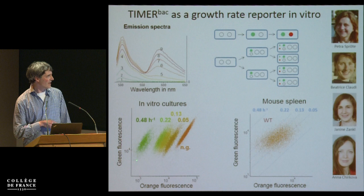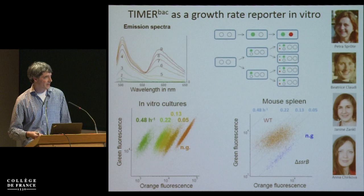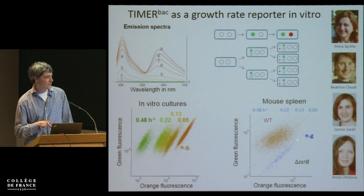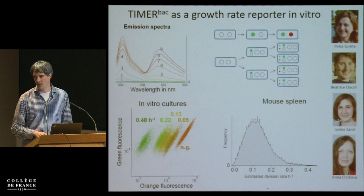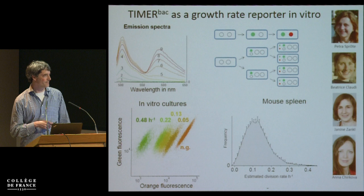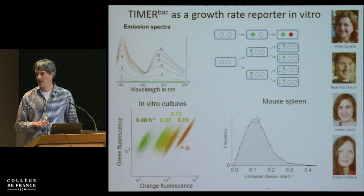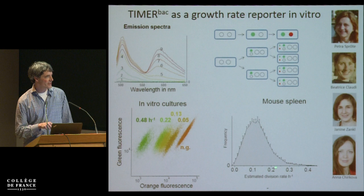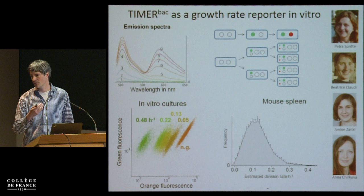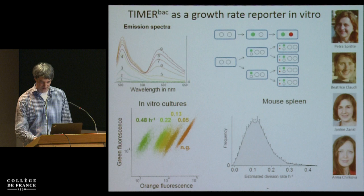In vivo, we don't have these nice sharp distributions but more like a diffuse cloud, which indicates diversity in growth rates. Comparing to a SPI-2 mutant that cannot divide, we get a distinct cloud. From these data we can estimate the division rate distribution, and the range is enormous — about 10 times more diversity than most in vitro systems. Some bacteria don't grow at all, but some grow at comparatively high rates. And we know that these few fast-growing bacteria dominate all the offspring, as expected from exponential proliferation. These few happy bacteria really drive disease progression forward.